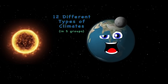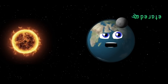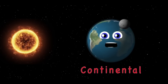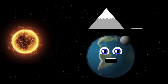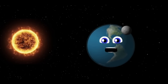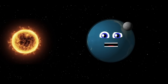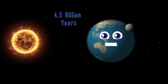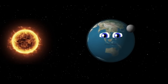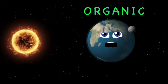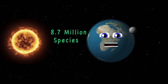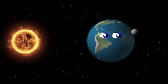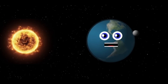There are 12 different types of climates on Earth: moderate, polar, dry, tropical, and continental are five groups. One climate in no group is highland, way above the sea. I'm the third planet from the sun and no one is denser than me. My axis is tilted 23.5 degrees. I was born 4.5 billion years ago. Keep this planet healthy so that we can all thrive.